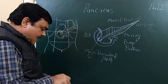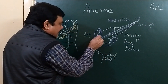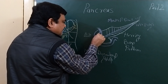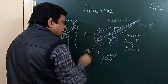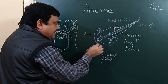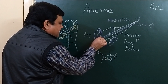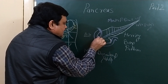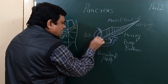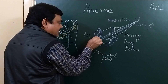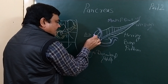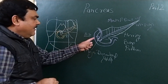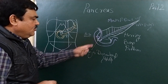The other duct is the accessory pancreatic duct — that is the accessory pancreatic duct of Santorini. It opens into the minor duodenal papilla. This is the minor duodenal papilla.